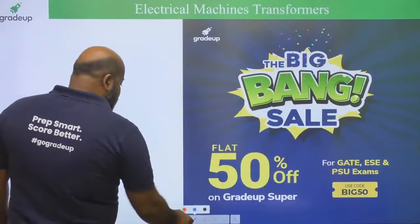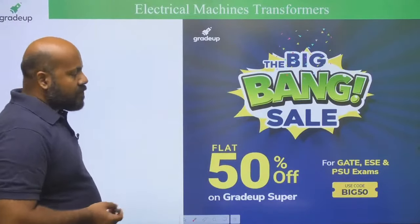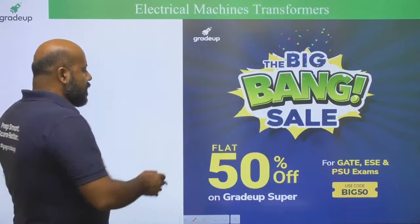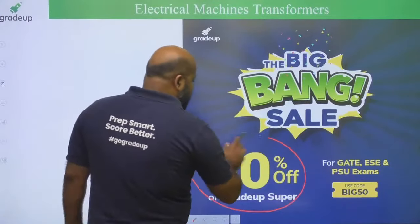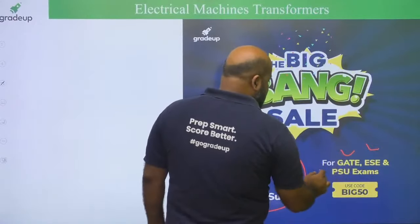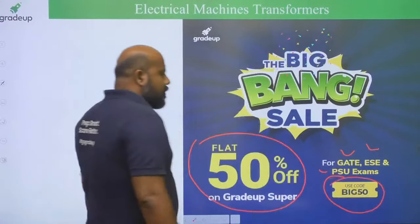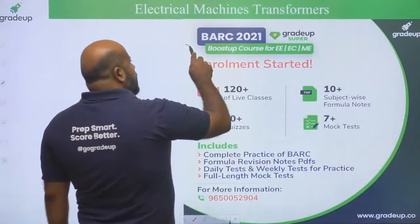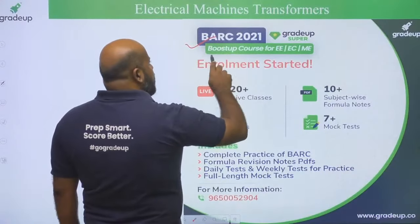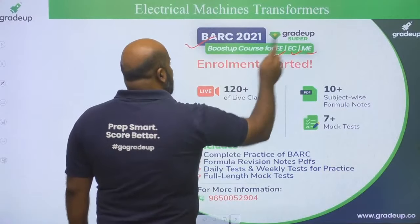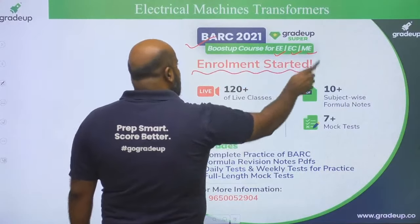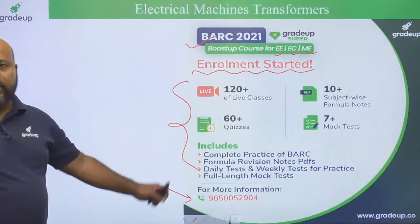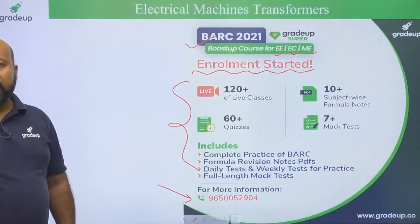Another important information for all candidates who want to join the Grade-up super subscription: Grade-up is bringing to you the month-end sale where you will get a flat 50% discount on the Grade-up super subscription for GATE, Engineering Services, and PSU examinations. You can use the code BIG50 to avail this discount. All candidates preparing for BARC 2021 examination can join the booster course for electrical, electronics, and mechanical streams. For any clarification, you can contact the number provided.